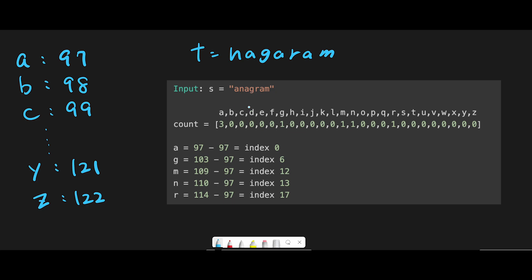In string s we have three a's, one n, one z, and one r. We apply the same logic as solution one — if the target index is already zero, return false; otherwise subtract one. Iterating through string t: n becomes zero, a goes to two then one then zero, d becomes zero, r becomes zero, and m becomes zero. We successfully iterate through all characters.